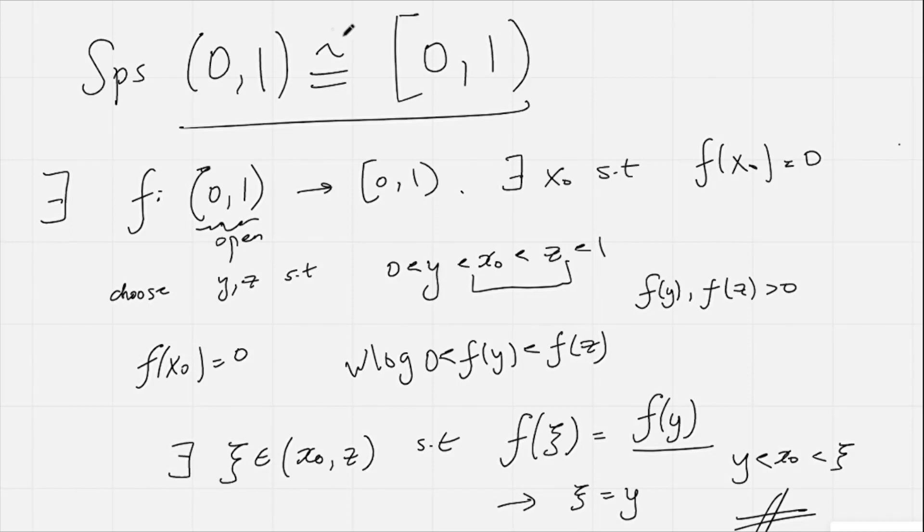And therefore, (0,1) is not homeomorphic to [0,1). I hope you have enjoyed this video, and if you are intrigued by this result, I do encourage you to study things like analysis, topology, or at least have a look into them when you have the opportunity to do so. Anyway, thank you for watching, I'll catch you in the next one. Have a great day.